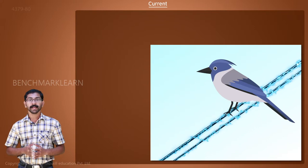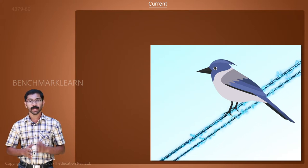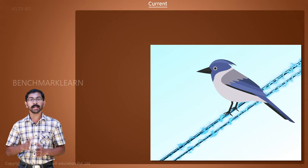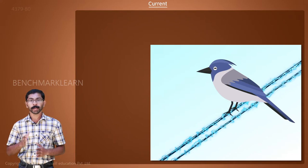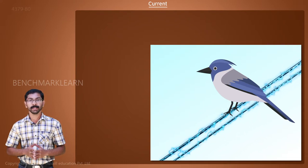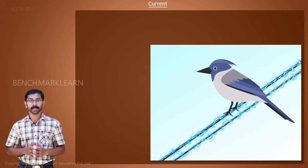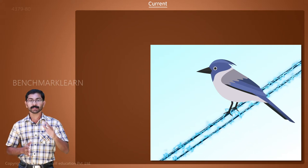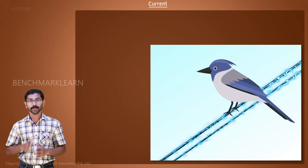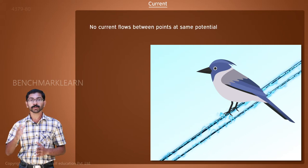An electric line carries electrical energy and so is made of a good conductor like aluminum. When a bird sits on a single electrical line, the entire body of the bird is at the same potential as that of the electrical line. So, no current flows through the bird's body.